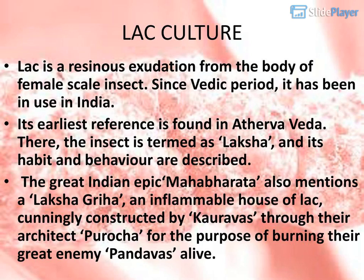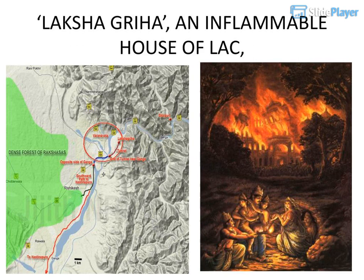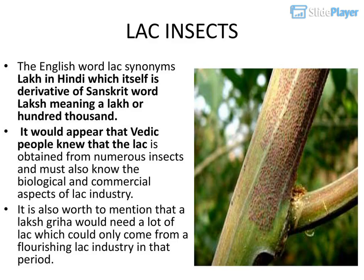In Atharva Veda, the insect is termed as Laksha, and its habit and behavior are described. The great Indian epic Mahabharata also mentions a Laksha-graha — an inflammable house of LAK, cunningly constructed by Kauravas through their architect Purocha for the purpose of burning their great enemy Pandavas alive.